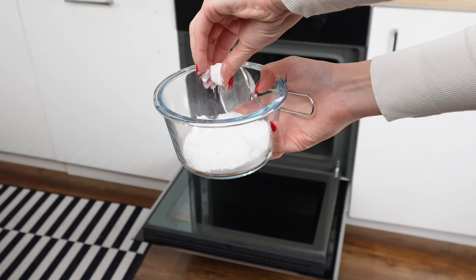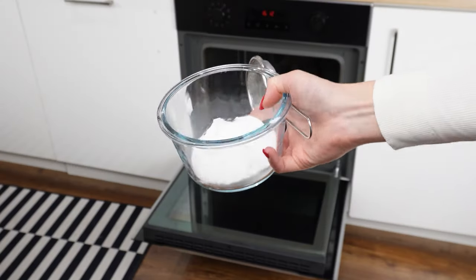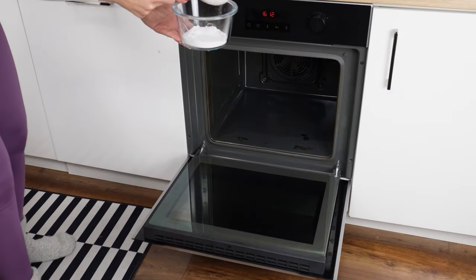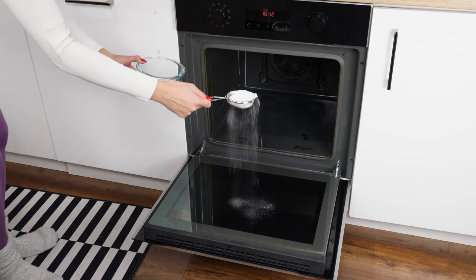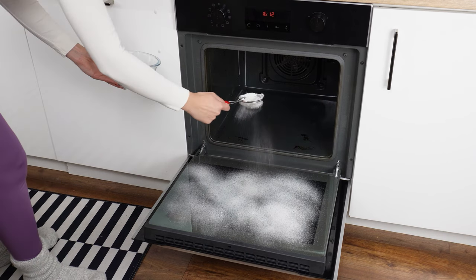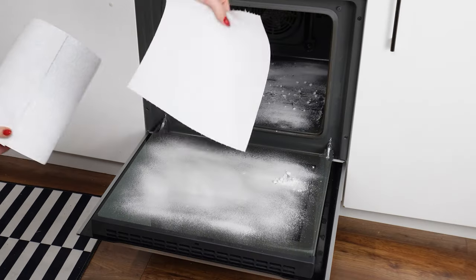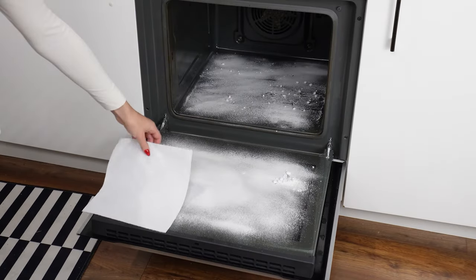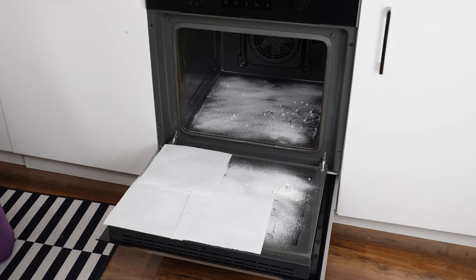If you don't like scrubbing off burnt grease and food residues, use baking soda. It has excellent cleaning properties and is safe for health. Sprinkle it evenly over the doors and inside the oven using a sieve. A thick layer should cover the entire surface. Then, take a paper towel. Spread it in the areas covered with baking soda.